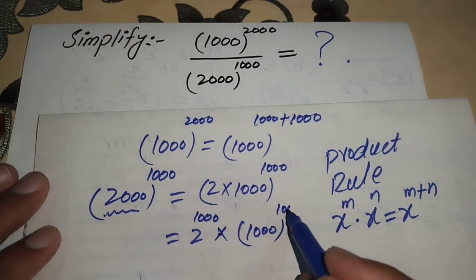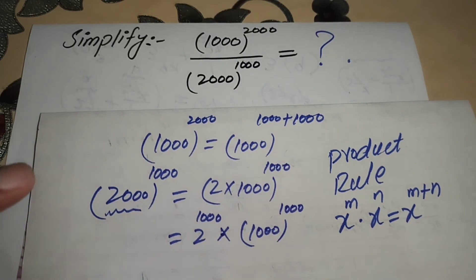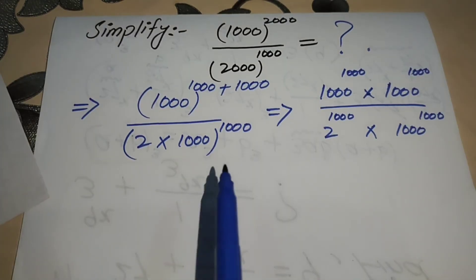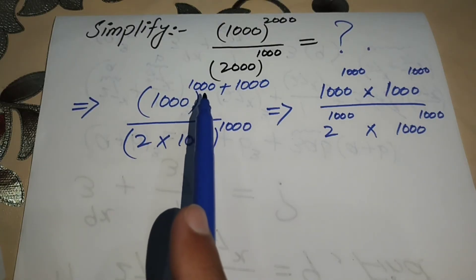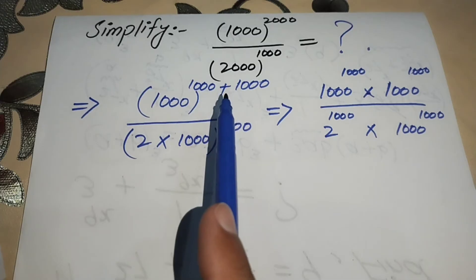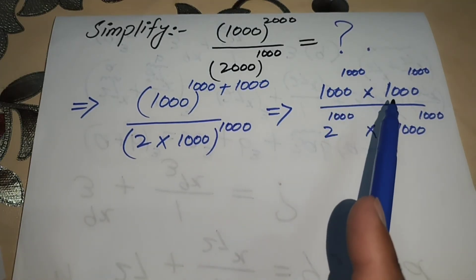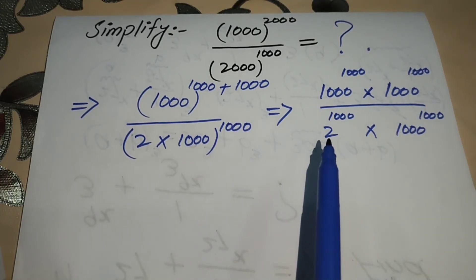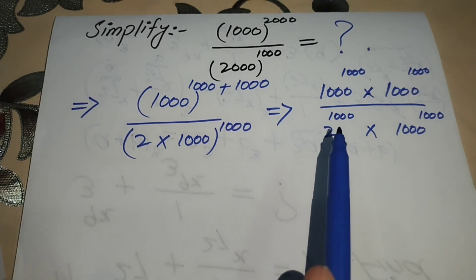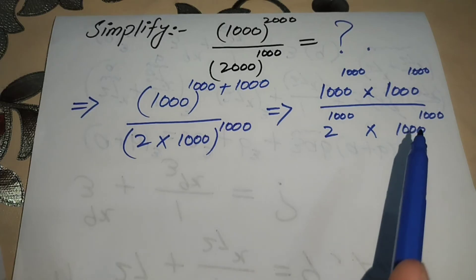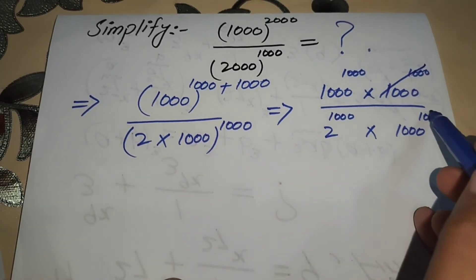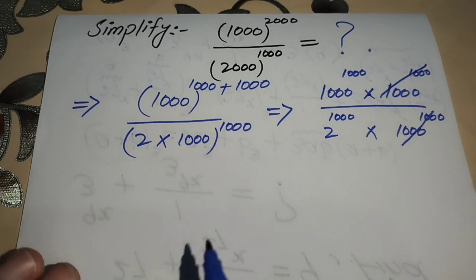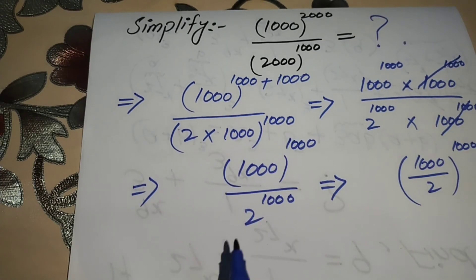Substituting our rewritten numerator and denominator into the expression, the numerator is 1000^1000 × 1000^1000 and the denominator is 2^1000 × 1000^1000. We cancel out the common factor 1000^1000 from both the numerator and denominator, leaving us with 1000^1000 over 2^1000.